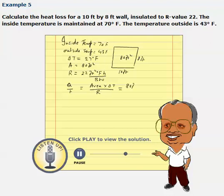it is 80 foot square times 27 degrees Fahrenheit divided by 22 R value, foot square degrees Fahrenheit hour over BTU. So this will be equal to, here you can cancel foot square, foot square, degrees Fahrenheit, degrees Fahrenheit. We are left with BTUs per hour.